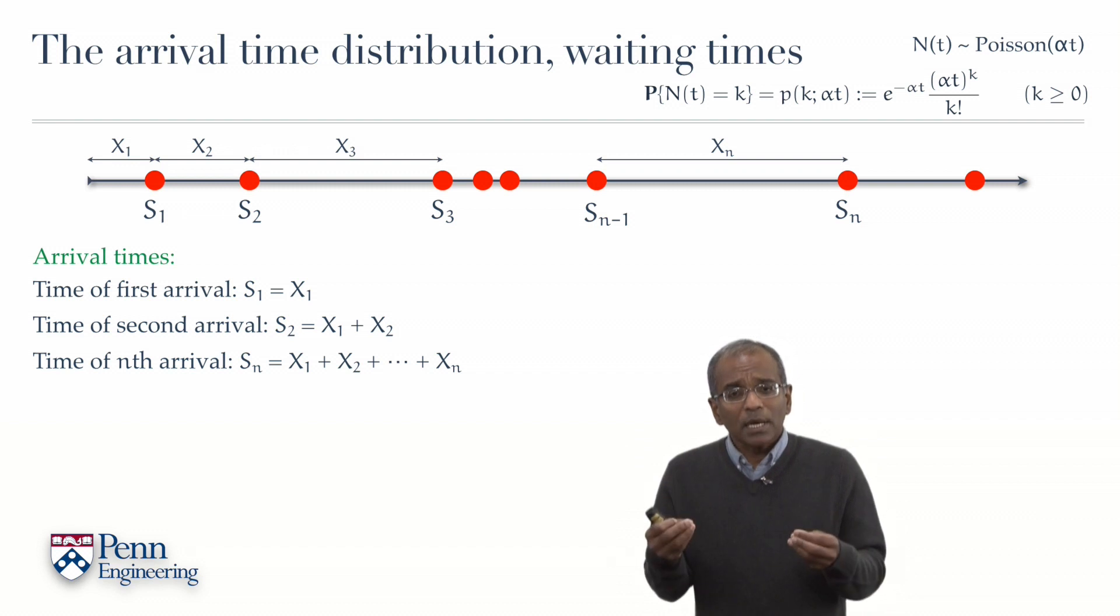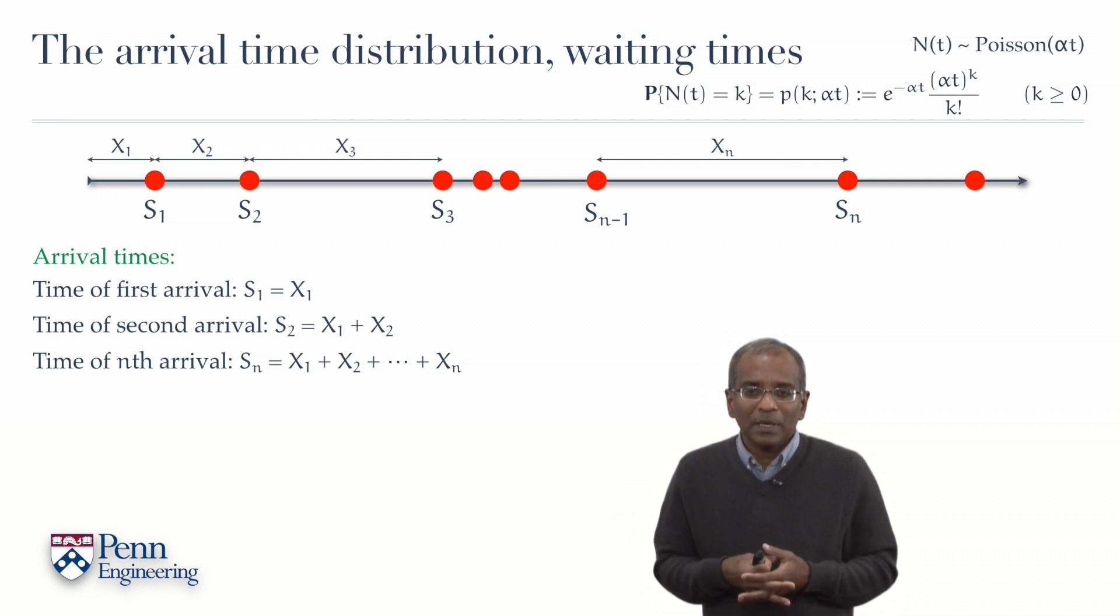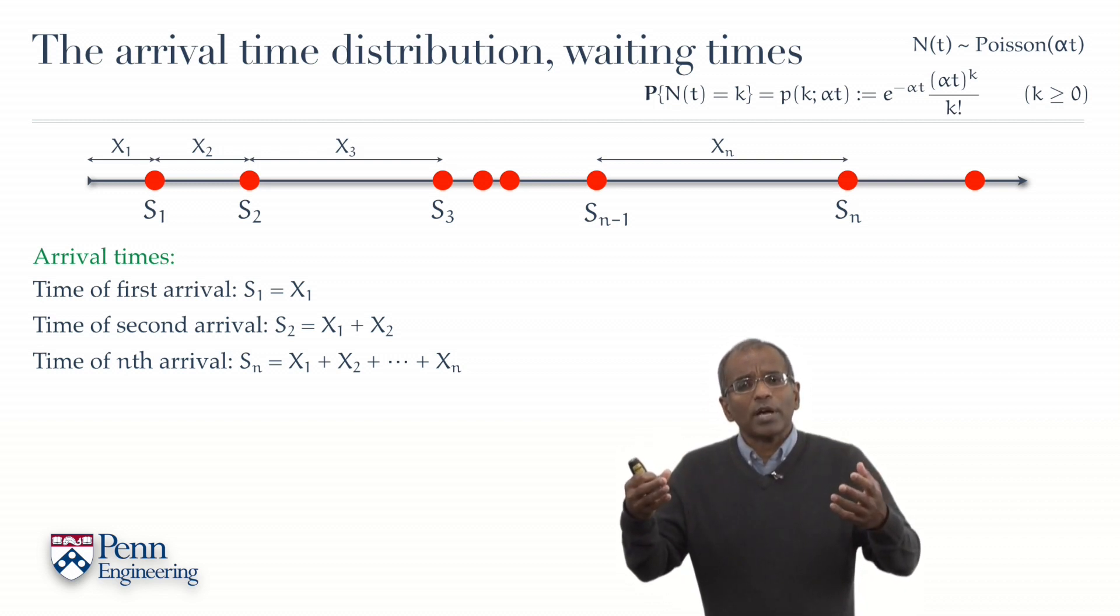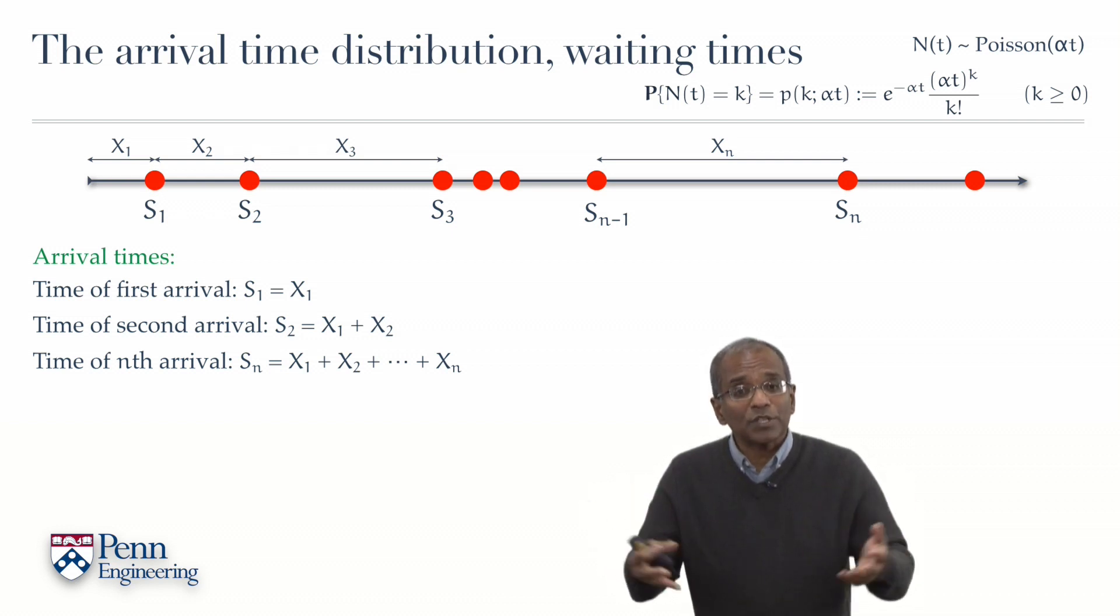Now these waiting times are much more complex in terms of their chance description. For one, these are continuous chance variables, they are not discrete in nature. How does one go about characterizing probabilities and probability measures involving these continuous variables?